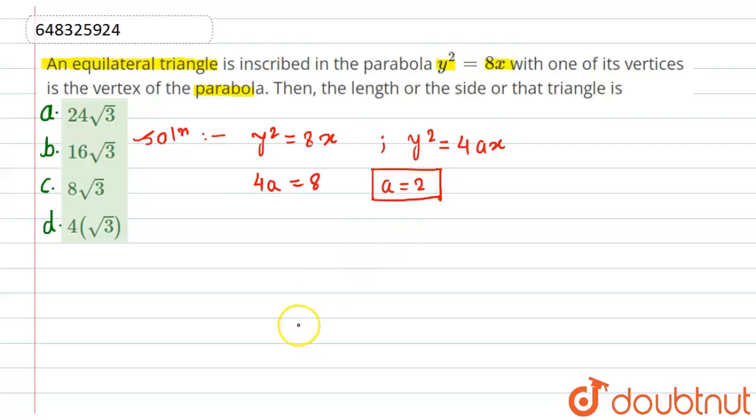Now what we will do, we will let there is a point on parabola that is P having the coordinate of at² comma 2at. So on substituting the value of a here, this point will become P into a is 2 into t², 2 to the 4 times of t. Now since the triangle is equilateral triangle...